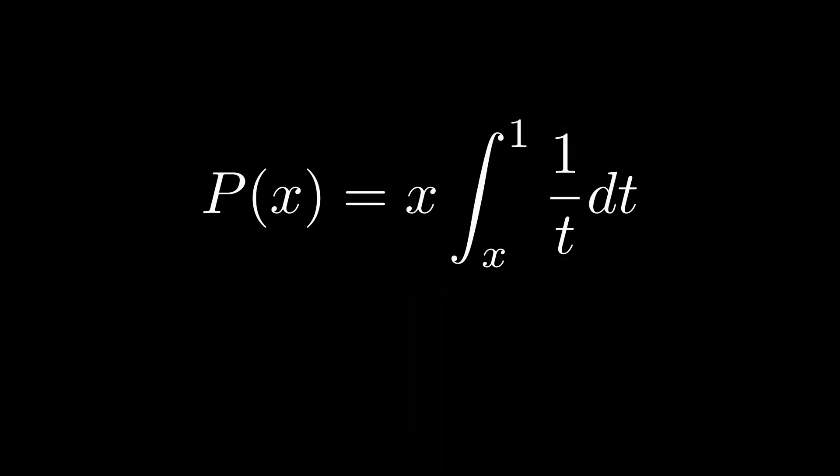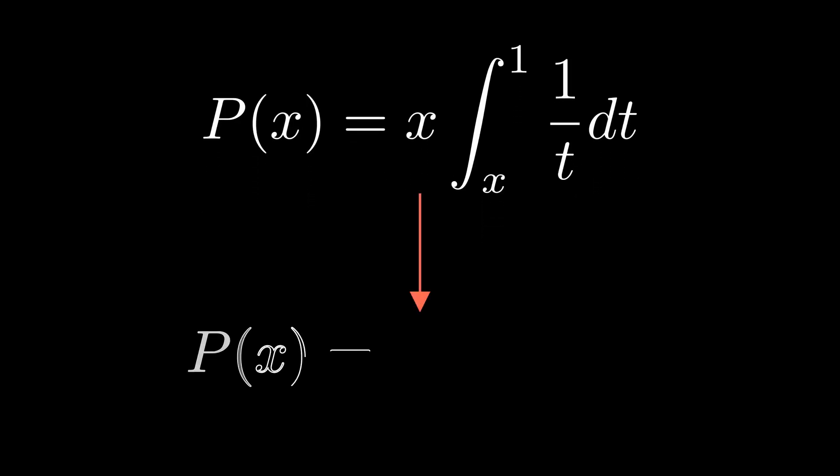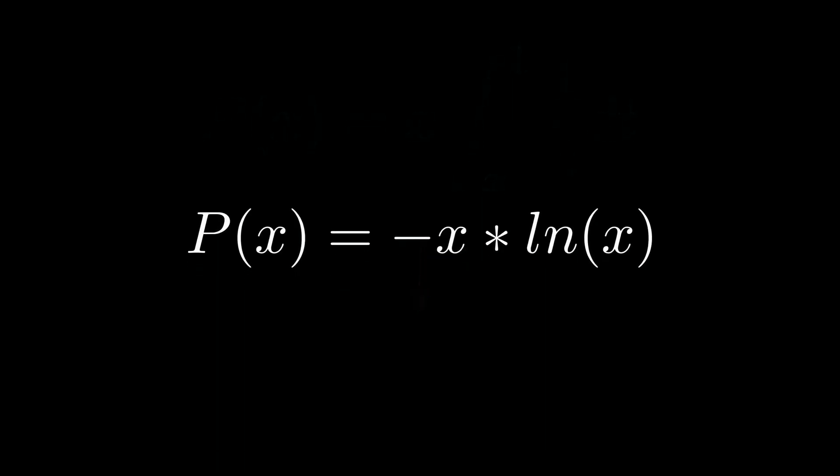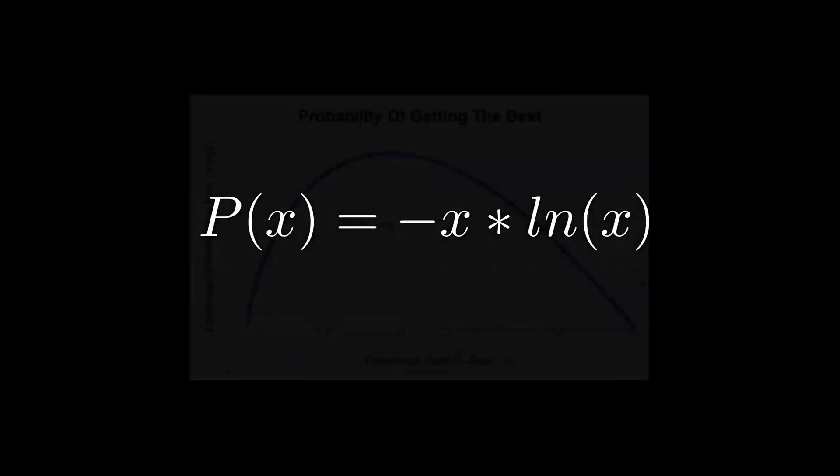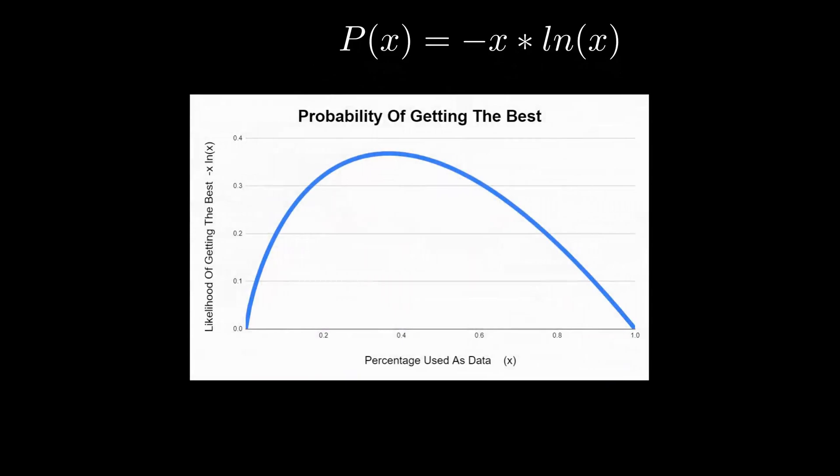Let's see how that works. The solution to this integral is negative x multiplied by the natural log of x. This tells us the probability of ending up with the best in a series given x. Since x represents what percentage of the series you investigate before trying to pick the best, we can plot this equation for different x's and see what the curve looks like. What it looks like is a curve that humps in the middle and is 0 at both ends. This makes sense because if you don't investigate any apartments before picking one, or you investigate every single apartment, then your odds of picking the best are 0.